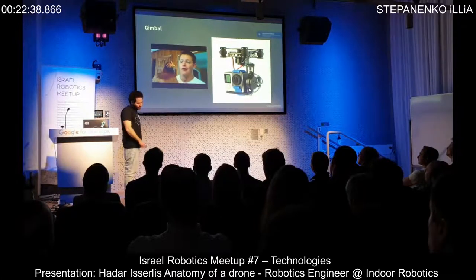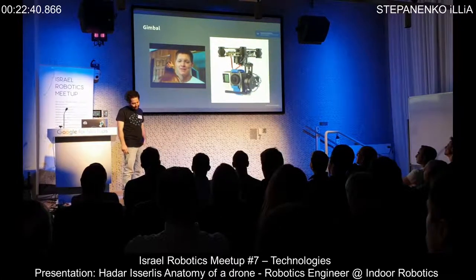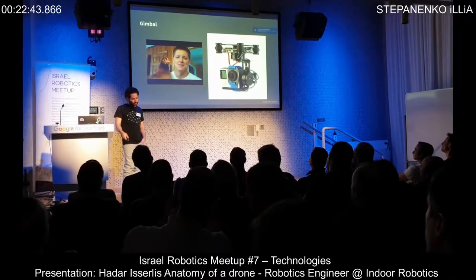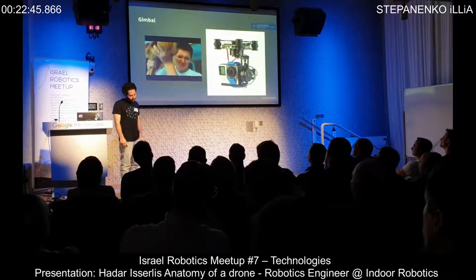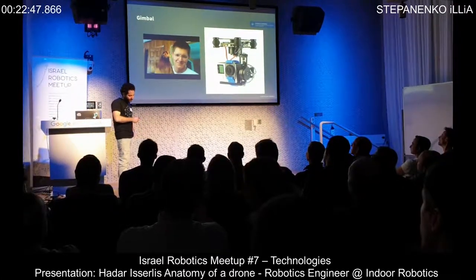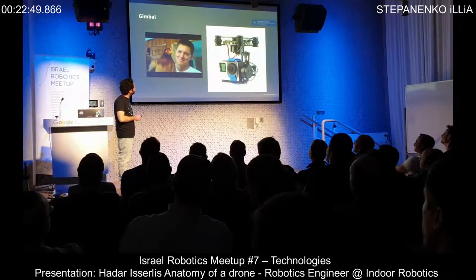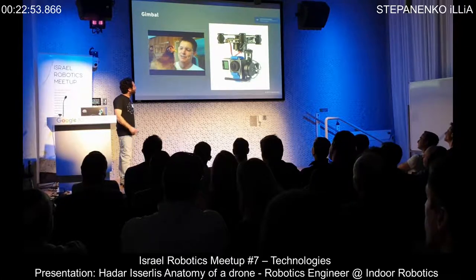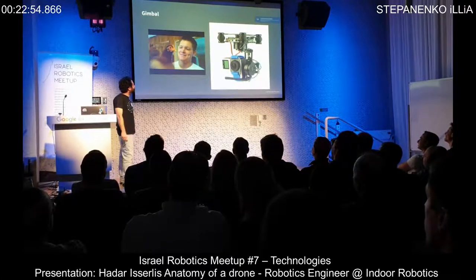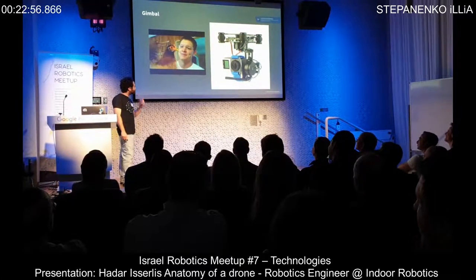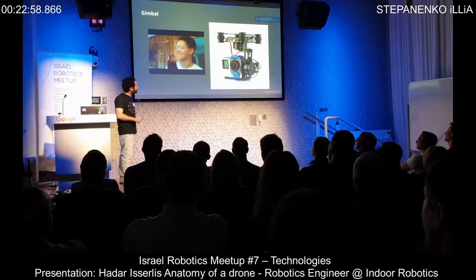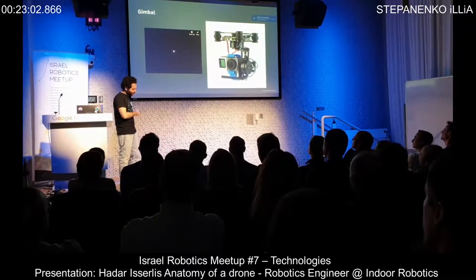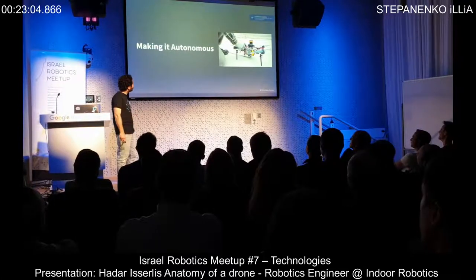A gimbal is a nice accessory if you're doing photography. In the context of an autonomous setup, this is useful for mounting sensors so that they maintain a fixed orientation regardless of the drone's tilt — something to take into consideration.